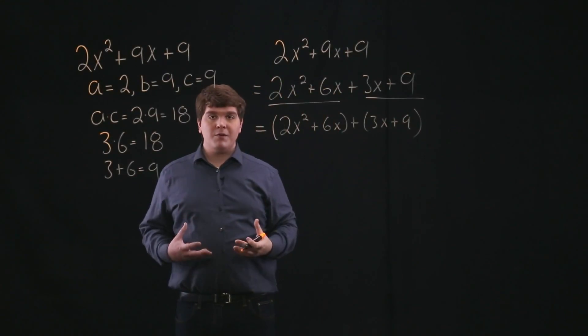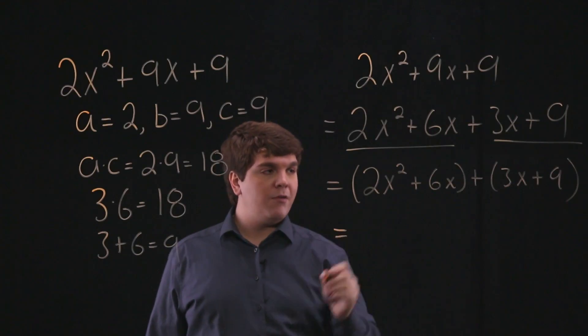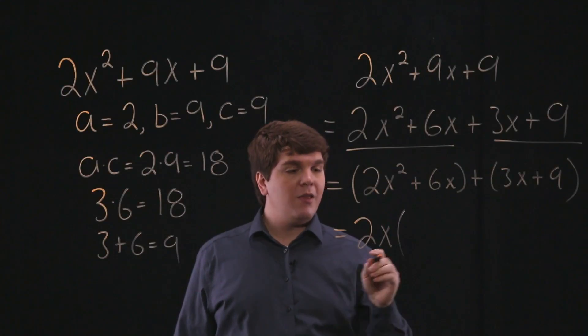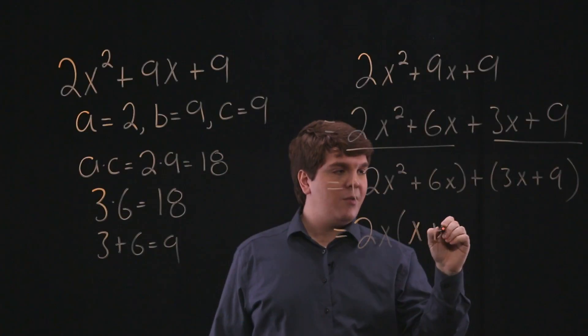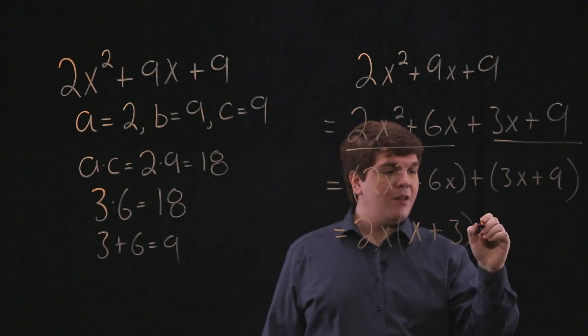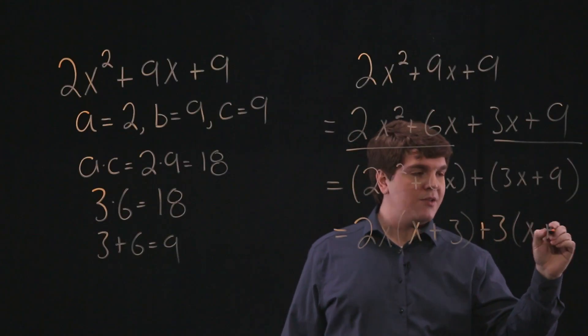Now we want to factor out the common factor in each of our terms. The first common factor is 2x, so we're left with 2x times x plus 3. And in our second term, the common factor is 3, so we're left with 3 times x plus 3.